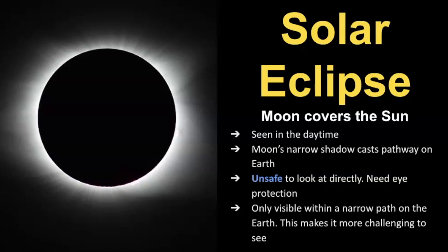It's a good thing to keep in mind that it's unsafe to look directly at a solar eclipse. You need eye protection. A solar eclipse is also only visible within a narrow pathway along the Earth, and this makes it more challenging to see. I myself have never truly seen a solar eclipse. My hope is at some point in my lifetime, I'll be able to travel to a part of the globe where a solar eclipse will be happening along that narrow pathway.